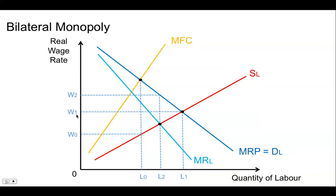Now this is as far as the economics can get us. It tells us the range of possible wages that will happen depending on who has the relative strength in the negotiating process. If the monopsonist employer has more bargaining power, then the wage is going to be closer to the original wage W0. Whereas if the trade union has greater bargaining power, then it's going to be closer to W2 or W1 depending on what the trade union's objectives are. With collective bargaining and a trade union involved, we're going to see the wage push up from W0 to W1, possibly as high as W2, but really no higher than W2. Anything in that range is possible.